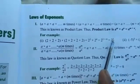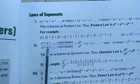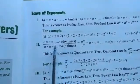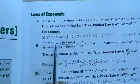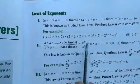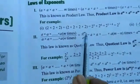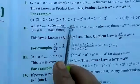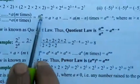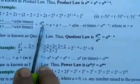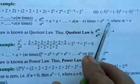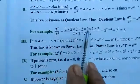Next, if the bases are the same and the values are divided: a raised to power m divided by a raised to power n. The base is a in both cases, but the powers are different. When the sign is divide, we subtract the powers. So a raised to power m divided by a raised to power n becomes a raised to power m minus n.